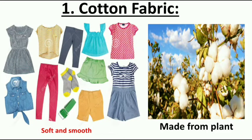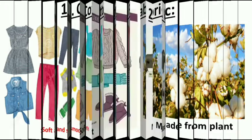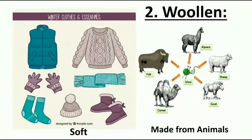Here you can see some examples of cotton fabric. Cotton fabric is made from plants and is smooth and soft. Woolen clothes are made from animals and are very soft and warm.